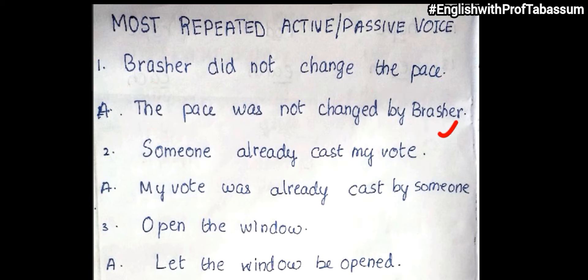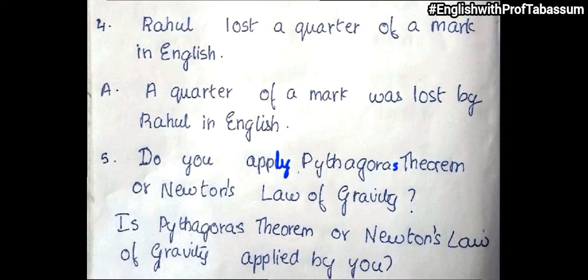The next one: 'Someone already cast my vote.' The answer would be: 'My vote was already cast by someone.' Note there is no word like 'casted'. Then: 'Open the window' becomes 'Let the window be opened.' Next: 'Rahul lost a quarter of a mark in English.' The answer is: 'A quarter of a mark was lost by Rahul.'